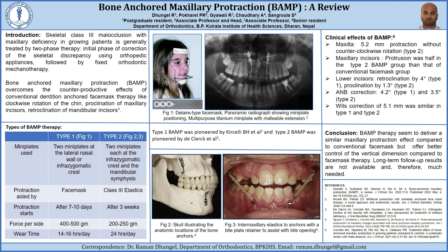A systematic review and meta-analysis by Cornelis et al. analyzed 28 articles including follow-up studies on BAMP therapy. The effects compiled include 5.2 mm of maxillary protraction without counterclockwise rotation by Type II BAMP. In the mandible, forward growth movement was restricted by 0.6 mm compared to untreated matched controls who showed anterior growth of 2.2 mm. Maxillary incisor protrusion was half in the Type II BAMP group compared to conventional face mask. Lower incisor retroclination of 4 degrees was observed in Type I BAMP, while proclination of 1.3 degrees was observed in Type II BAMP.